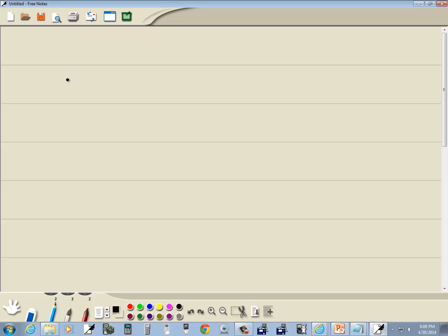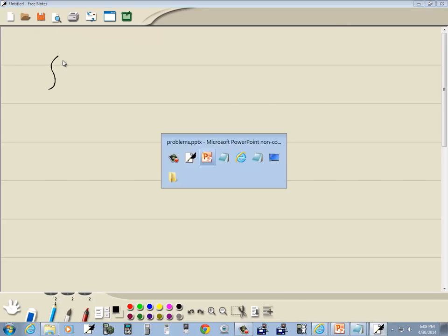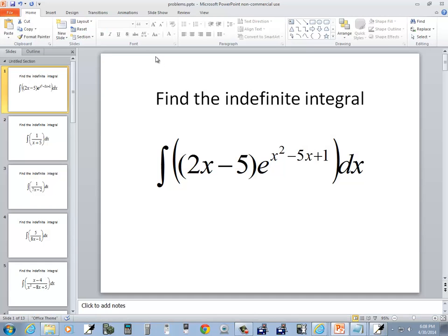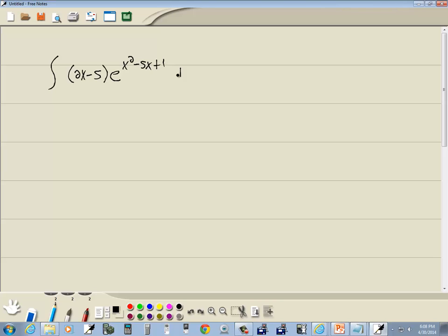Let's take a look at this problem. So we've got the integral of 2x minus 5e to the x squared minus 5x plus 1 dx.